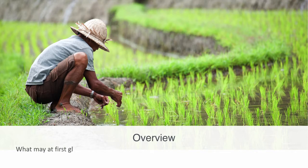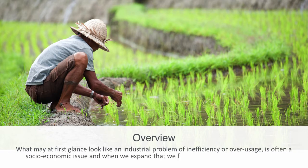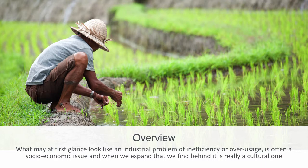What may at first glance look like an industrial problem of efficiency, pollution, or over-usage is often really a socioeconomic issue — and when we expand that, we find behind it is really a cultural one. This vastly expands the complexity of what we're dealing with, but it is important in identifying all the moving parts on all the different levels. In this video we'll be looking at the model of a socio-ecological system, specifically focused on the interaction between the ecological and social domains, trying to model and analyze them as an integrated system.